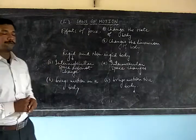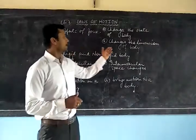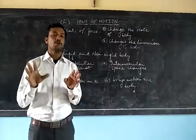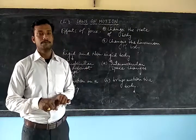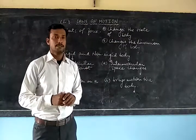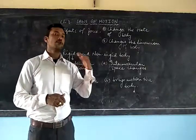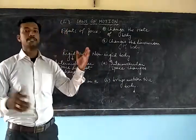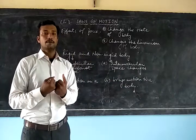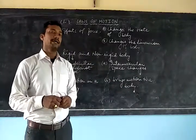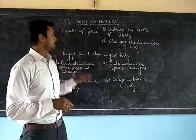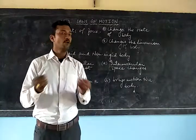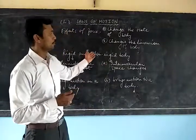We can classify bodies into two types — rigid and non-rigid — on the basis of intermolecular space. We are talking about solid bodies here. If the intermolecular space is very small with a very small gap between molecules, we call that body a rigid body. If the intermolecular space is larger, then we say that body is a non-rigid body.